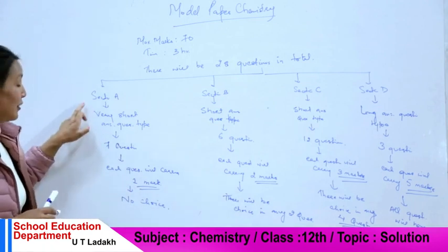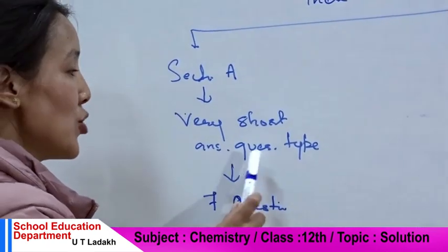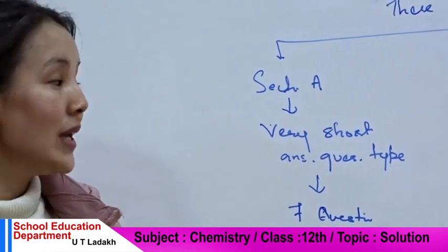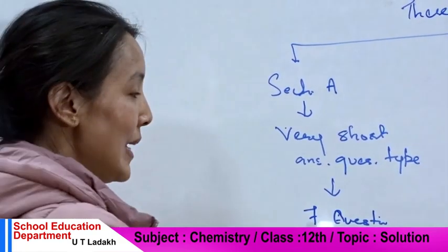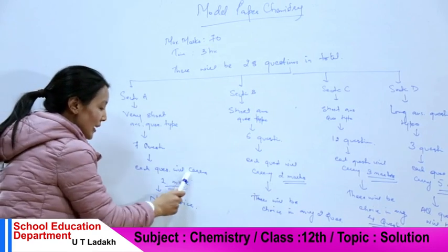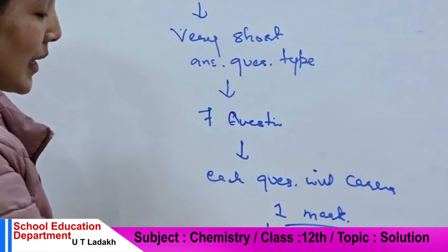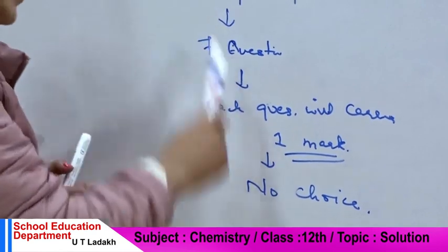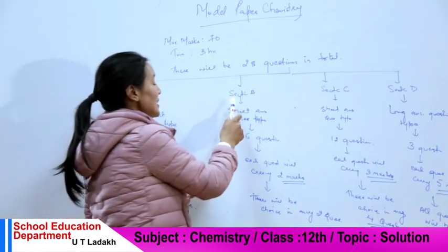Section A is a very short answer question type. This section is an objective type of question. We have seven questions, and each question will carry one mark. This section is an objective type of choice and is compulsory.